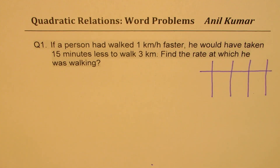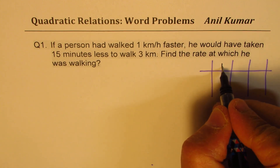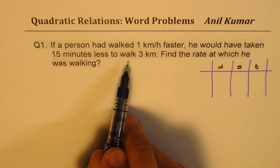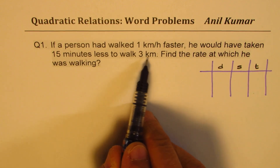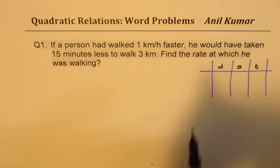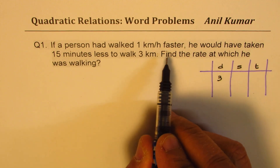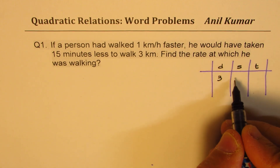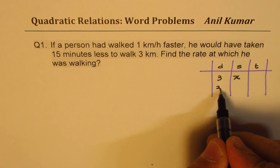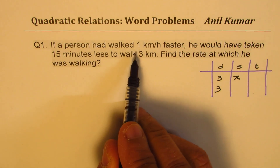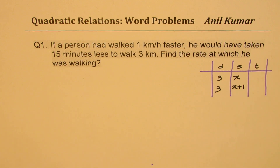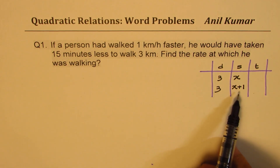Distance, speed, time questions should always be solved by making a table with three columns: distance, speed, and time. We are given that the distance is three kilometers. First, that distance is walked at some speed — let's call this speed X. In the second case, the person walked one kilometer per hour faster, so the speed is X plus one.